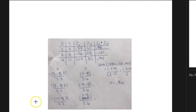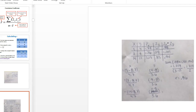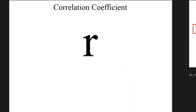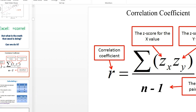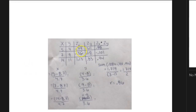Now I want to go back and talk about the rest of the formula, which says: divided by n minus 1. Remember we said that n stands for the number of pairs of scores. Looking back at our data, I have three pairs, so I divide by 3 minus 1, which is 2. And now I have my final answer: a correlation coefficient of 0.86.